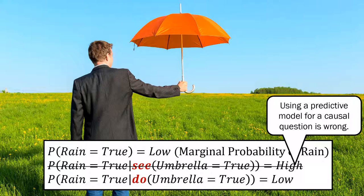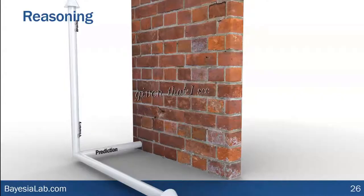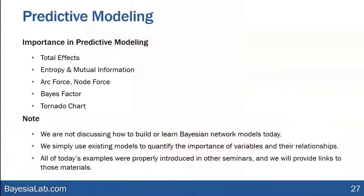Using a predictive model for answering a causal question most often is totally inappropriate. Just to illustrate again: 'given that I see' versus 'given that I do.' For now, let's focus on 'given that I see' — we will talk about importance in predictive modeling. The specific measures we will discuss are total effects, entropy, mutual information, and so on.